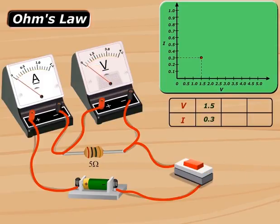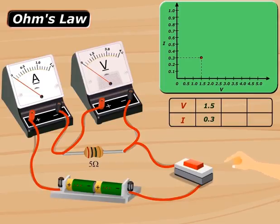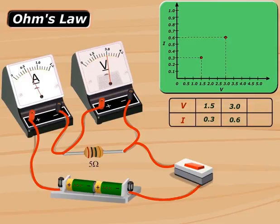When we add one more cell in the circuit, the potential difference across the ends of the resistor becomes 3.0 volts, and the current flowing through it becomes 0.6.